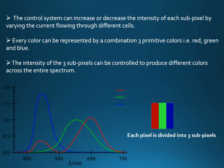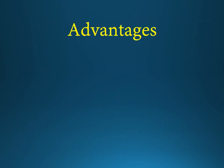By varying the pulses of current flowing through the different cells, the control system can increase or decrease the intensity of each sub-pixel color to create different combinations of red, green and blue. In this way, the control system can produce colors across the entire spectrum. Next question is, what makes plasma displays better over other electronic displays?